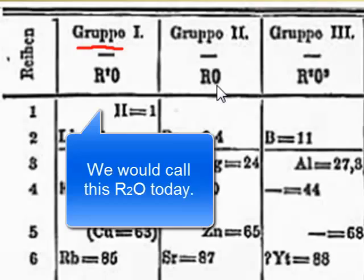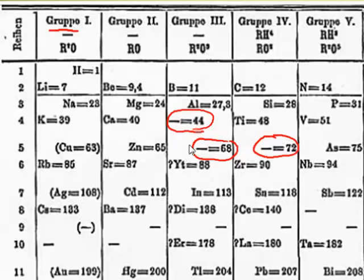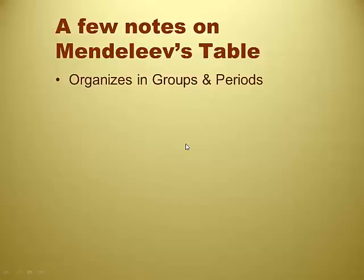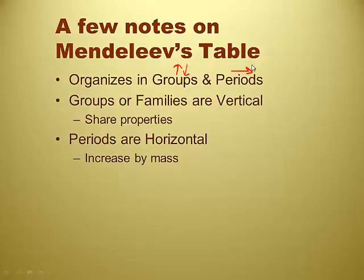This group only takes one of the element plus one oxygen. This group needs two of the element plus three oxygens in order to form a compound. And here we've got some compounds with hydrogen. He's also got a couple of elements where he doesn't know the name yet, but he predicts the mass. Mendeleev's table organizes in groups and periods — groups going up and down, and periods going across. Groups and families are vertical and they share properties. Periods are horizontal and increase by mass as you read to the right.